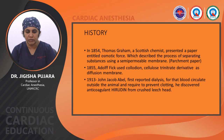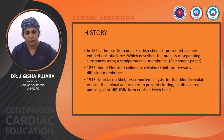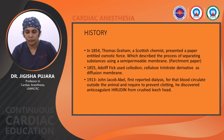History: In 1851, Thomas Graham, a Scottish chemist, presented a paper entitled Oncotic Pressures, which described the process of separating substances using a semipermeable membrane — parchment paper. In 1855, Adolf Fick used colloidal cellulose trinitrate derivatives as the diffusion membrane.